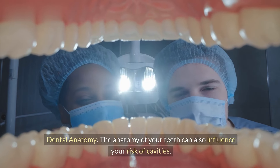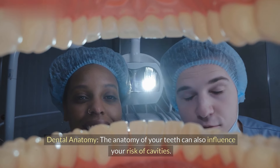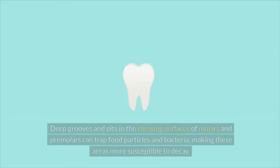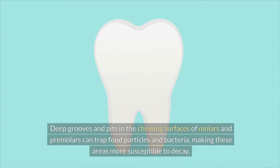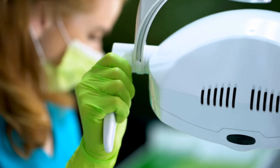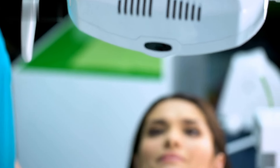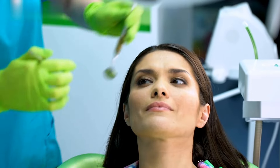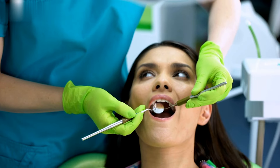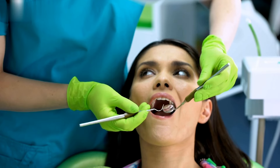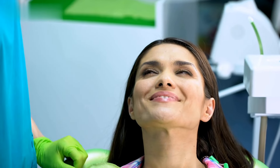Dental Anatomy. The anatomy of your teeth can also influence your risk of cavities. Deep grooves and pits in the chewing surfaces of molars and premolars can trap food particles and bacteria, making these areas more susceptible to decay. To minimize your risk, practice thorough oral hygiene, consider dental sealants to protect vulnerable tooth surfaces, and discuss orthodontic treatment options with your dentist or orthodontist if needed.